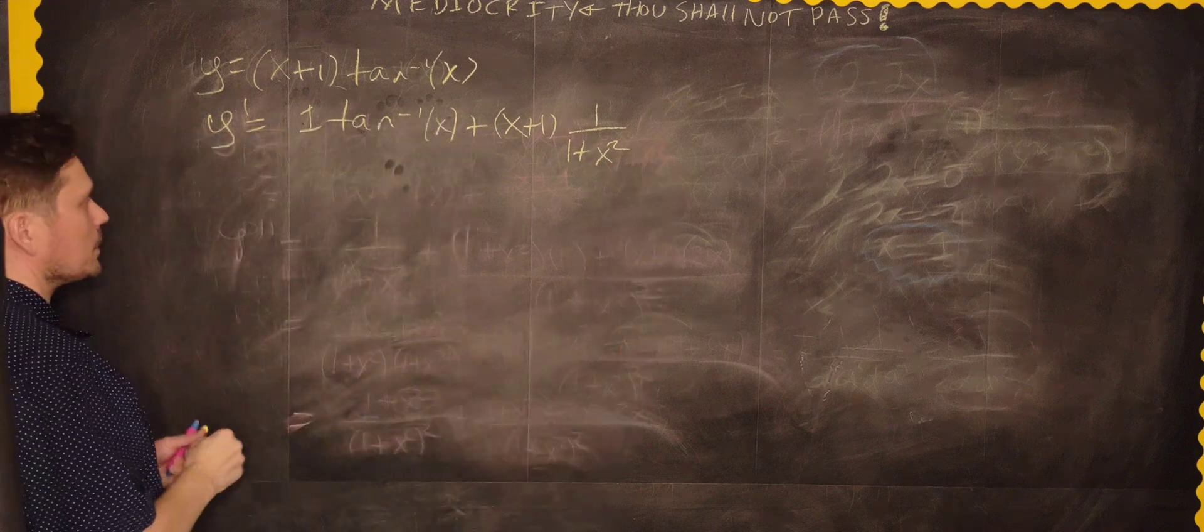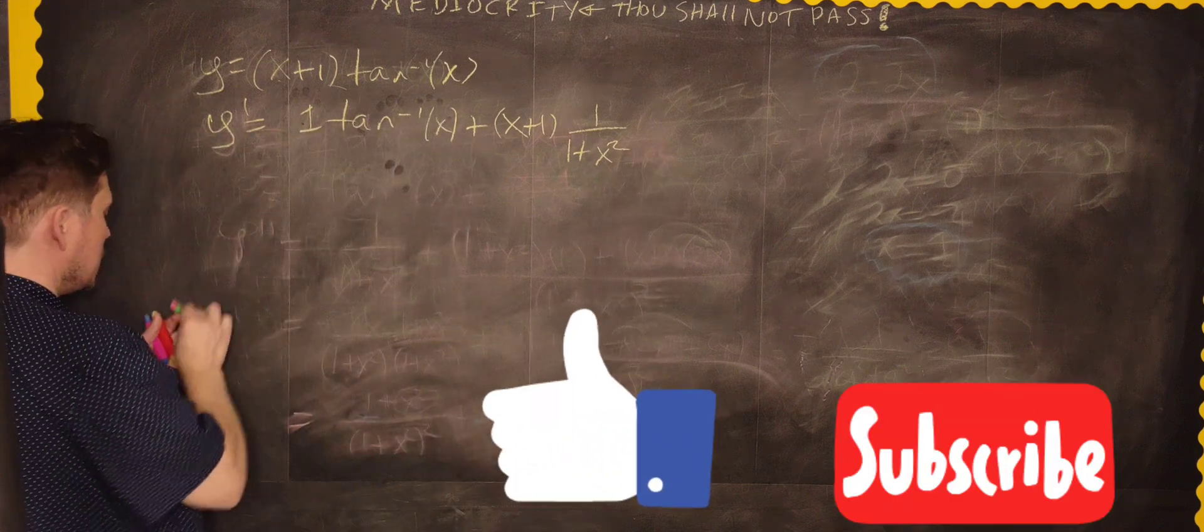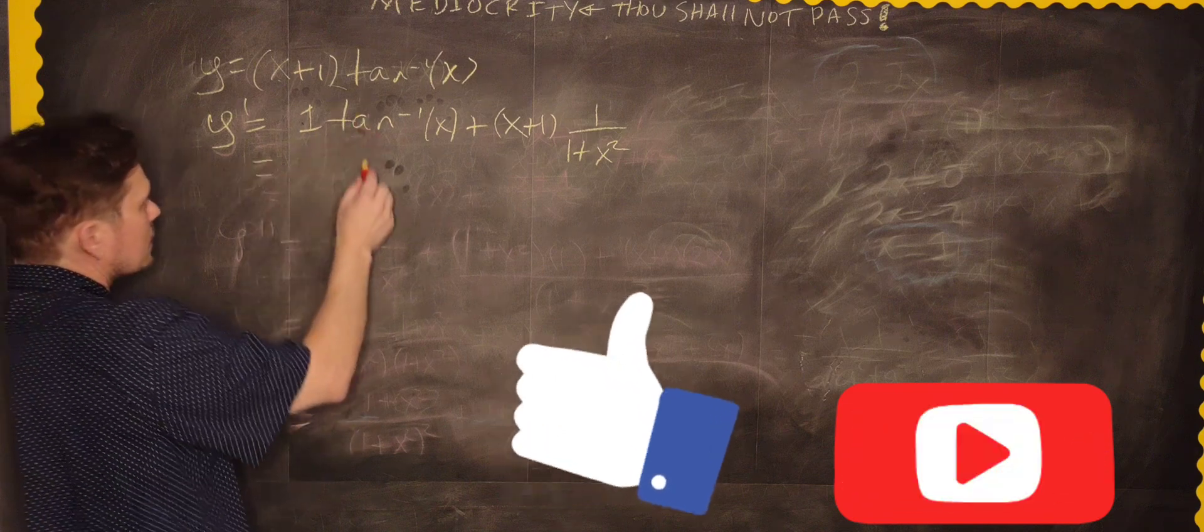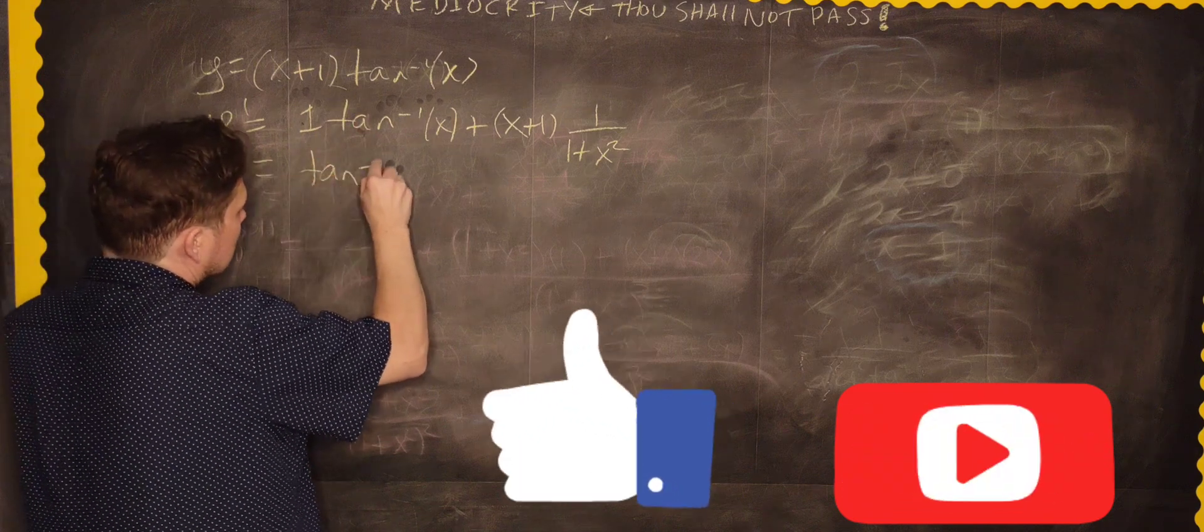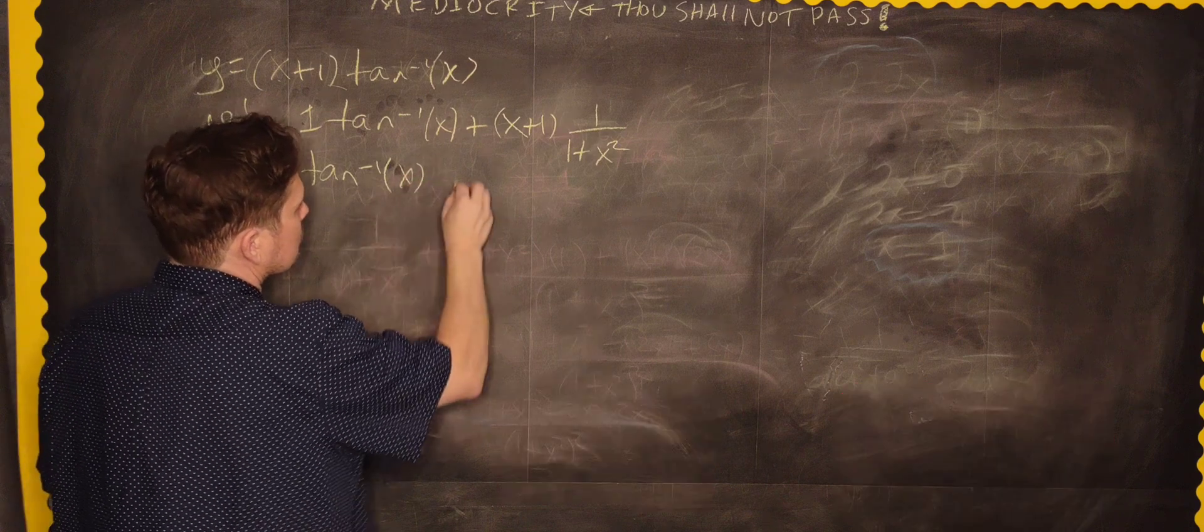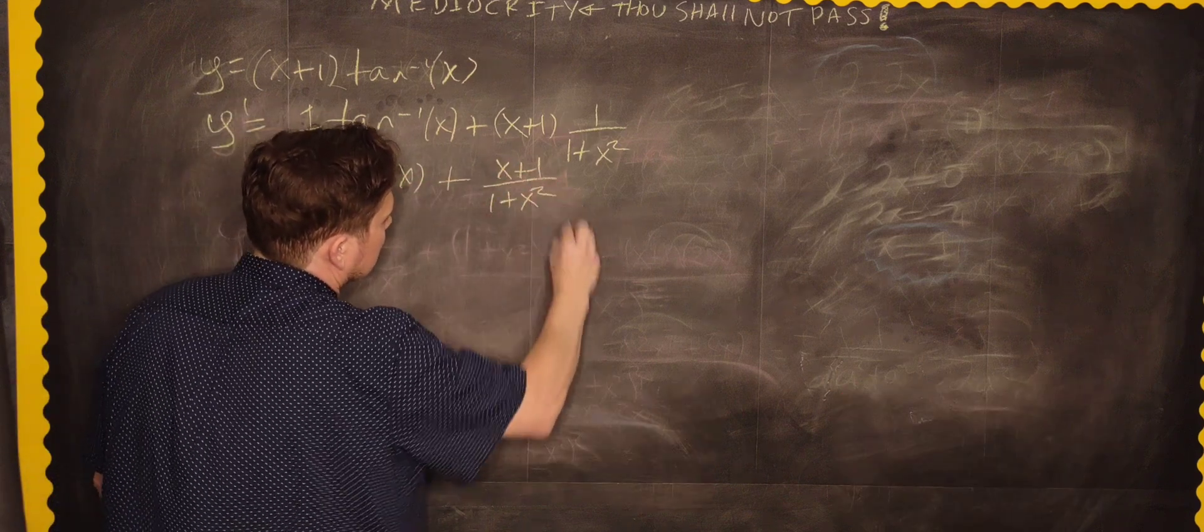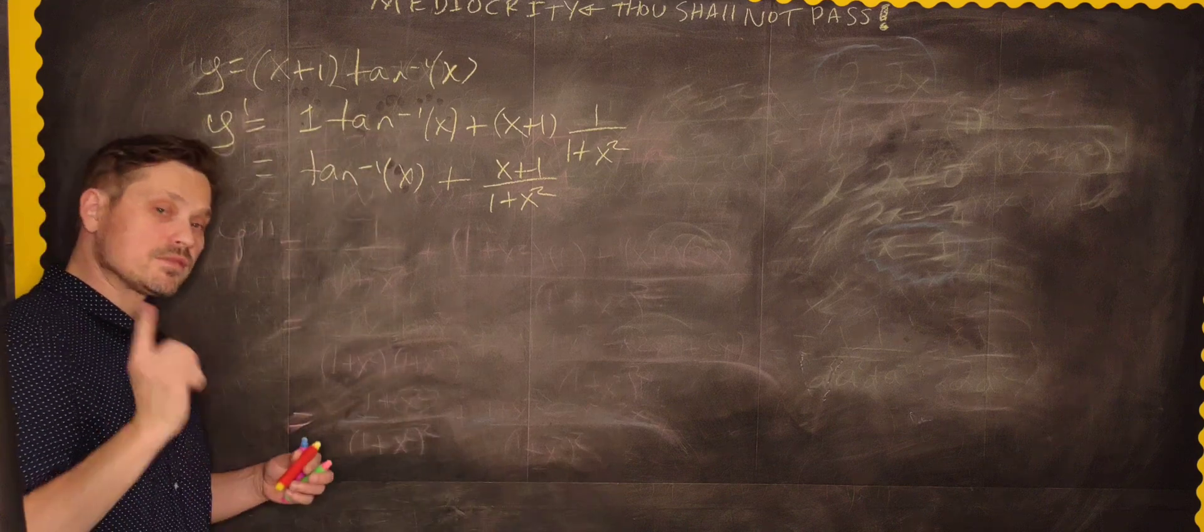Clean this expression up a little bit so it looks a bit more neat. It's going to be tan inverse of x plus x plus 1 divided by 1 plus x squared. This is just the first derivative.